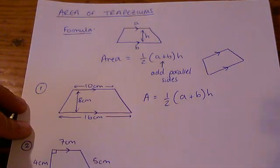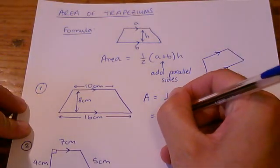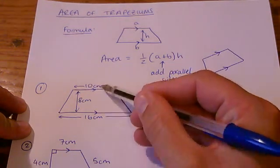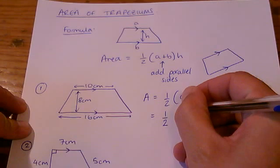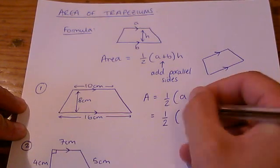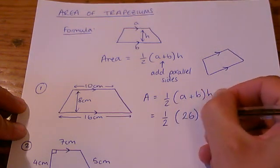So I would start by saying let's add together a and b. a plus b, they're the parallel sides, 10 plus 16. So I'm putting a plus b, in my head I'm doing 10 plus 16 which is 26.